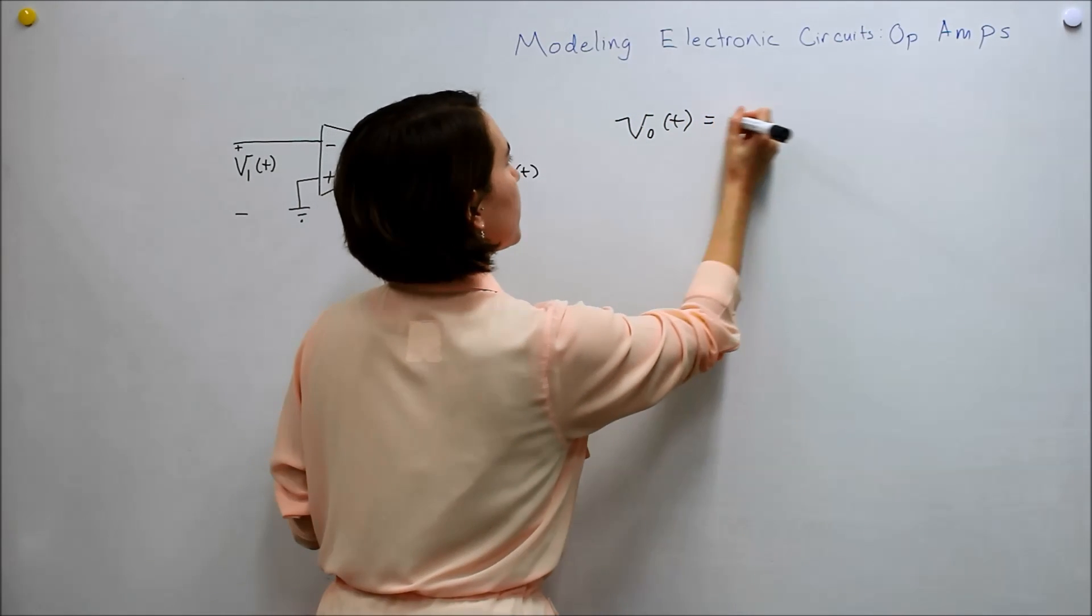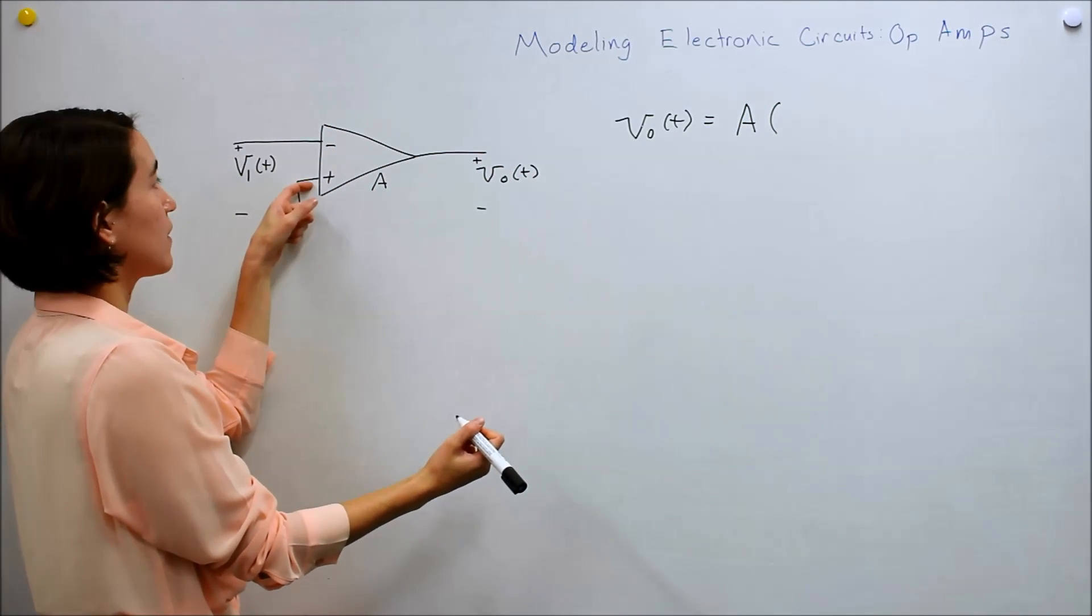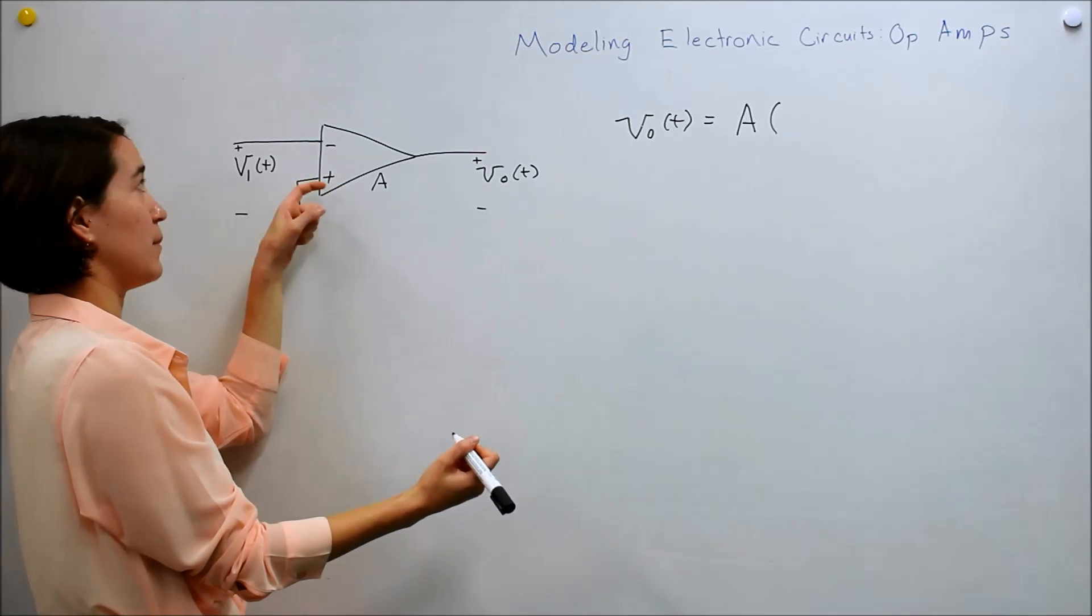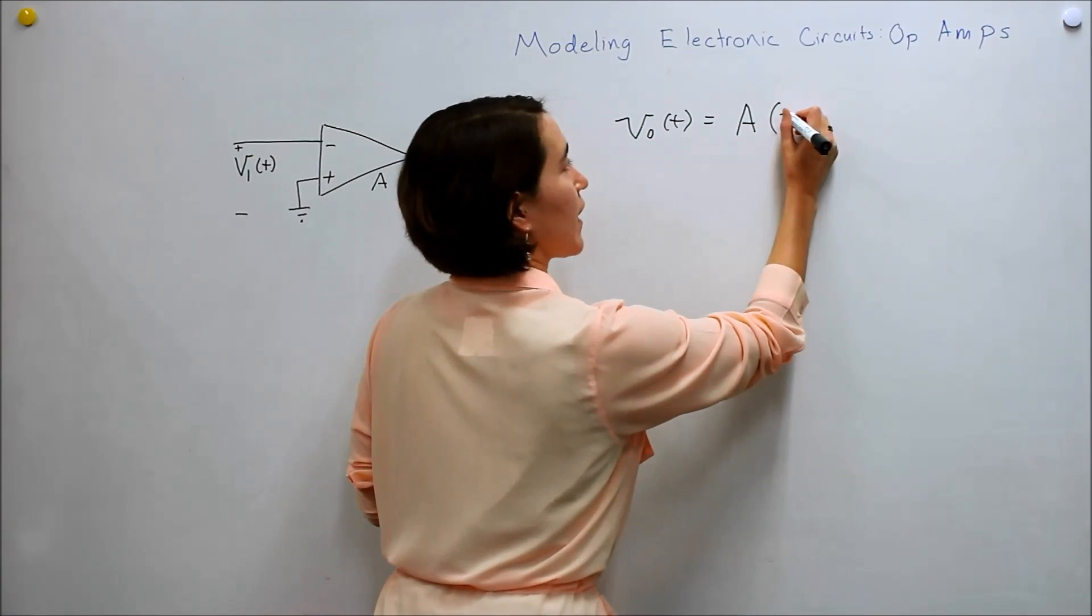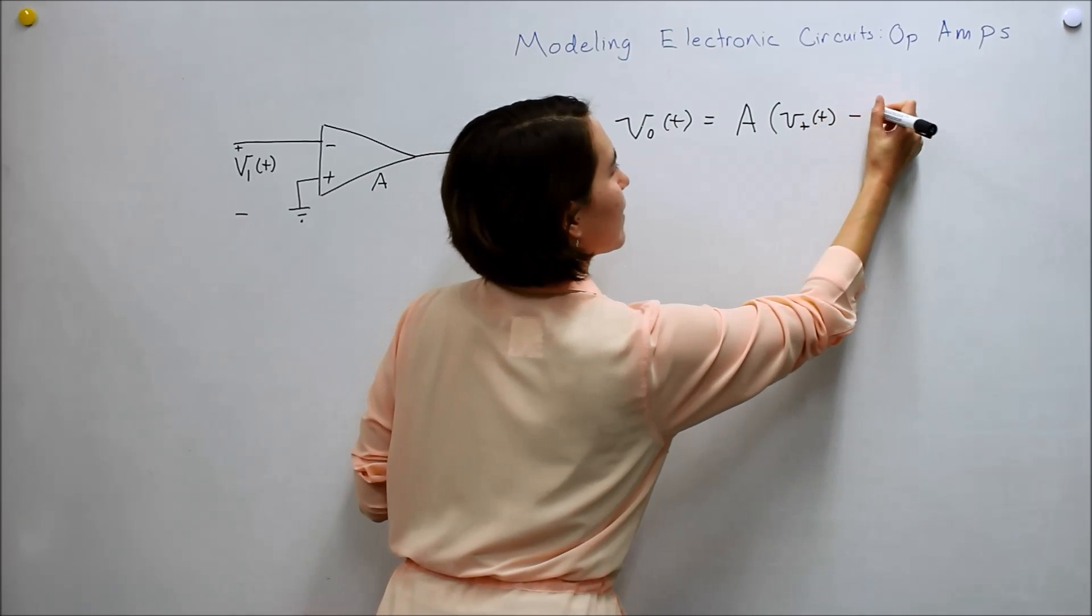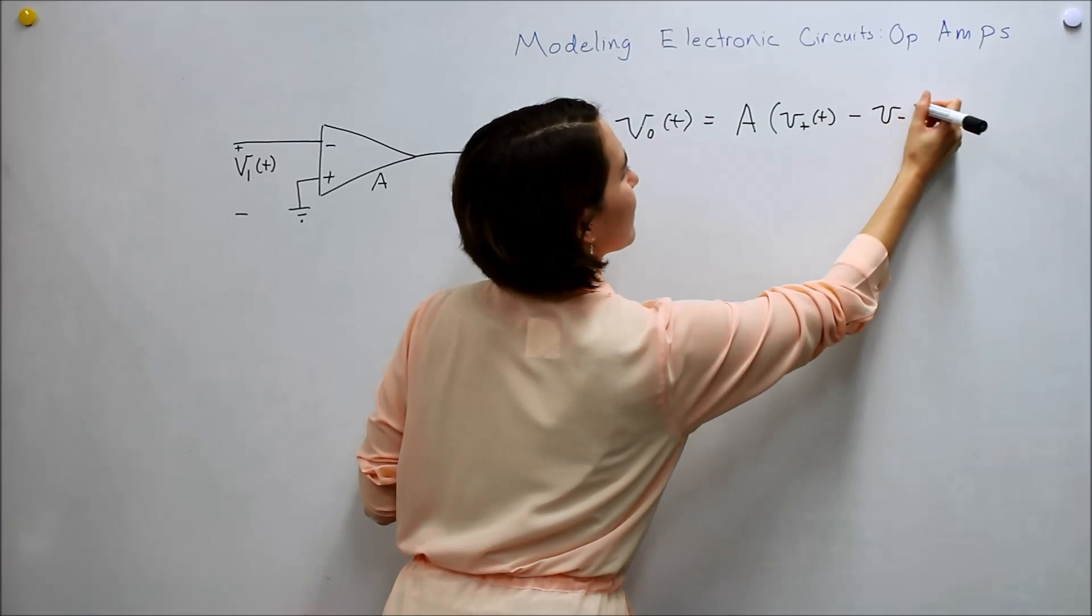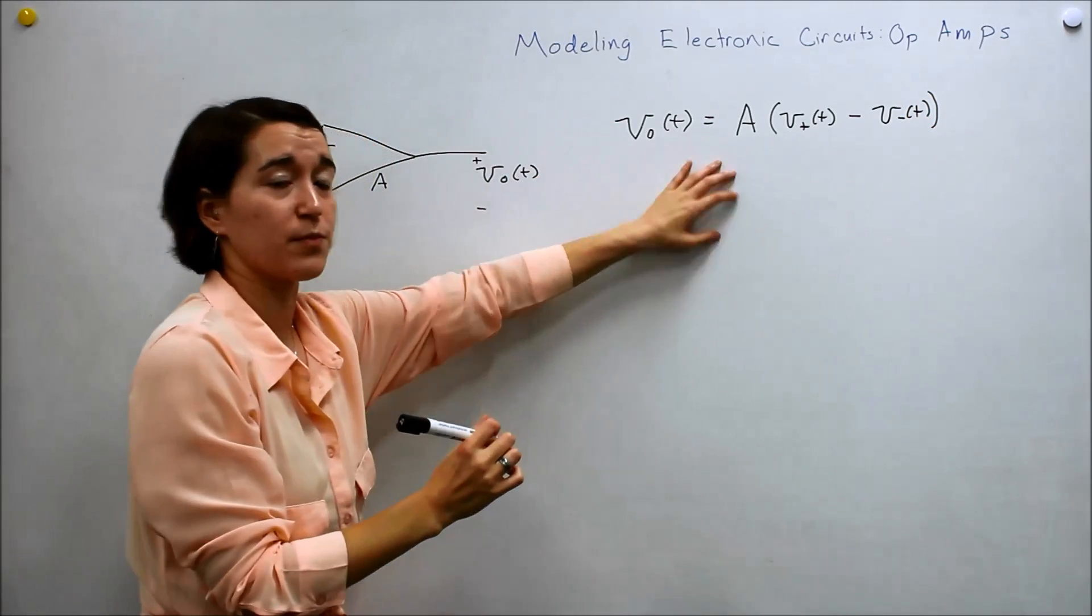going to be equal to some gain times the difference of this voltage of this positive input minus the voltage of the negative input. So we're going to call that V positive of T minus V negative of T. So that's a general expression.